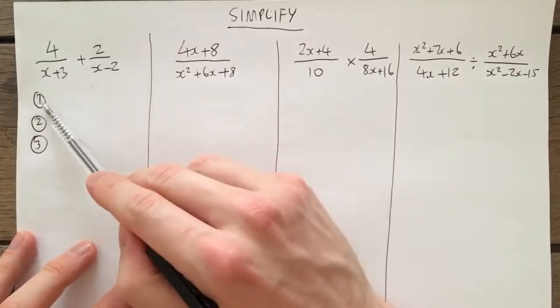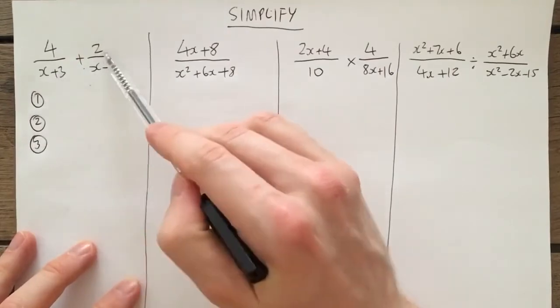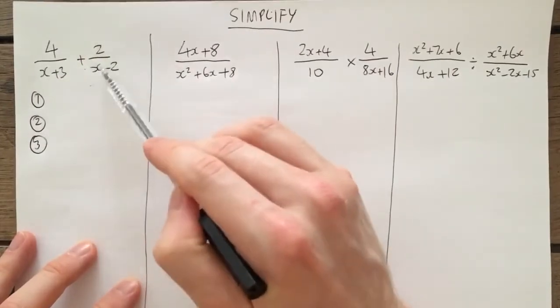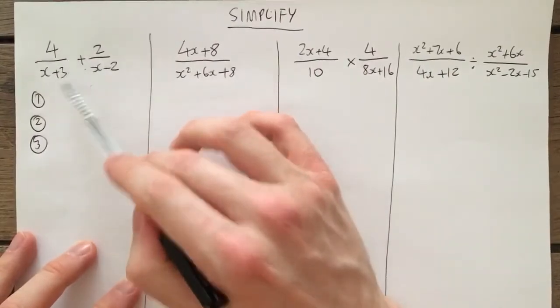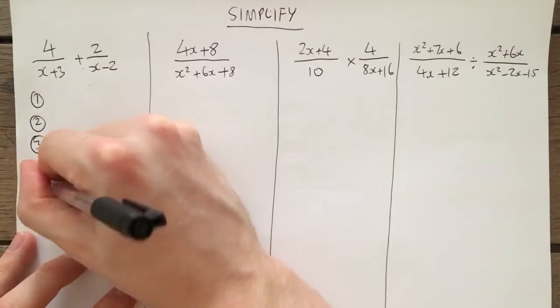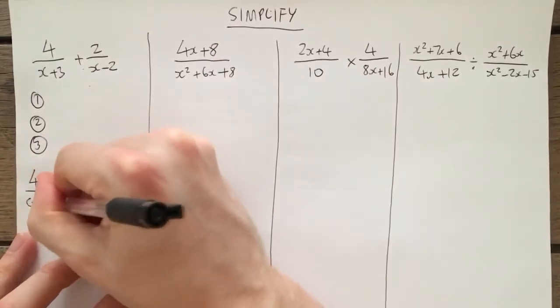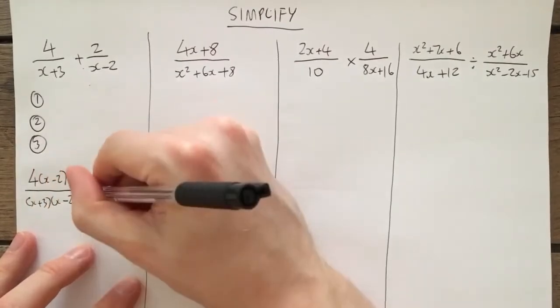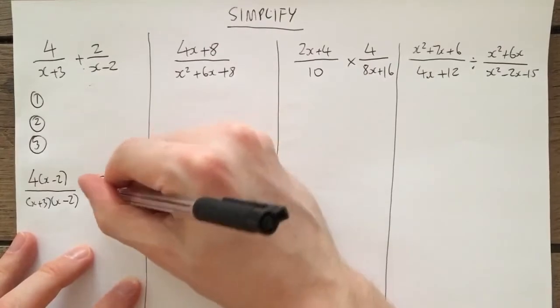When we add algebraic fractions, our first step is to make the denominators the same. So therefore I must multiply this fraction by x plus 3 and x plus 3 and multiply this fraction by x minus 2 and x minus 2, which will look a little bit like this.